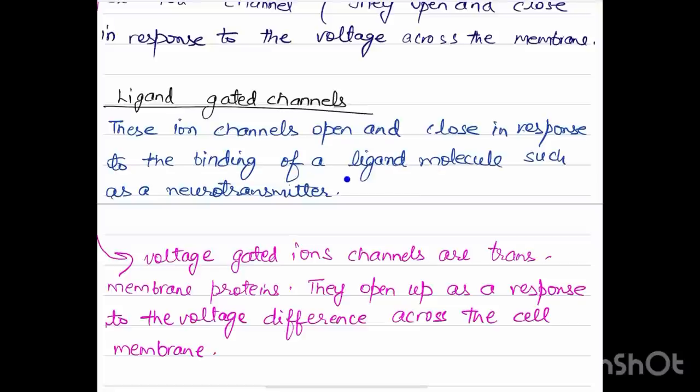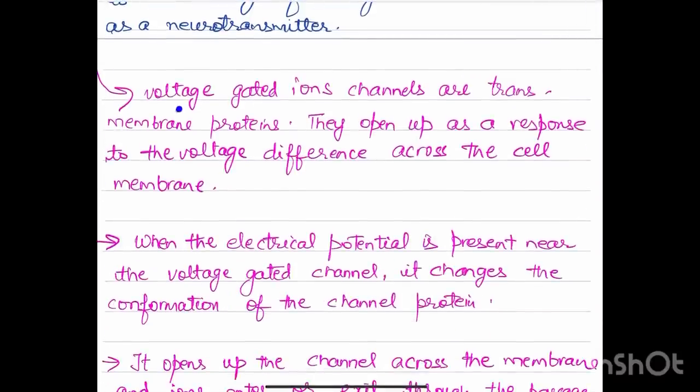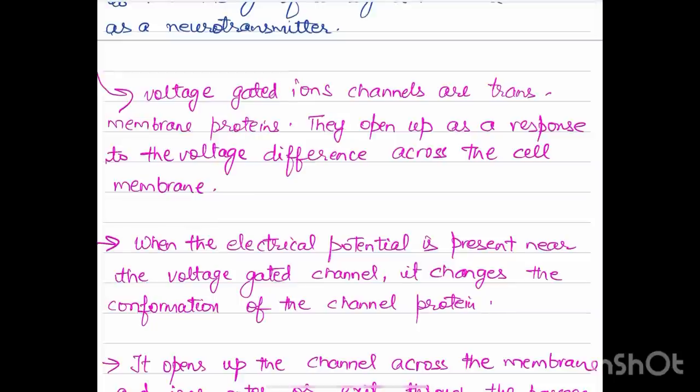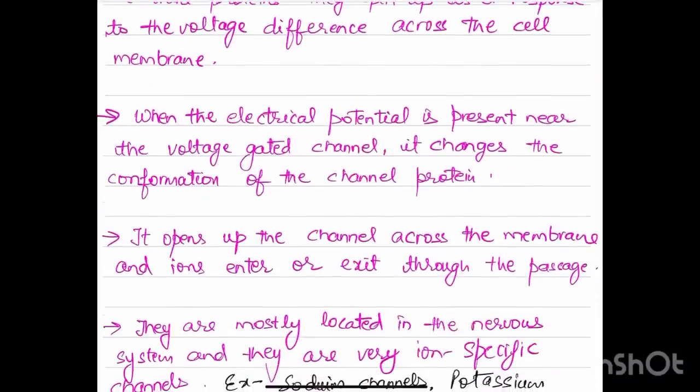Voltage-gated ion channels are transmembrane proteins that open up as a response to the voltage difference across the cell membrane. When the electrical potential is present near the voltage-gated channel, it changes the conformation of the channel protein and opens up the channel across the membrane.